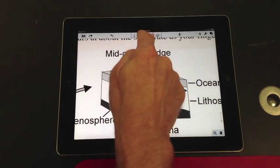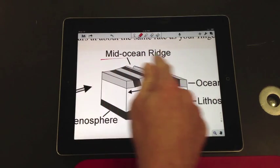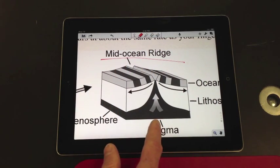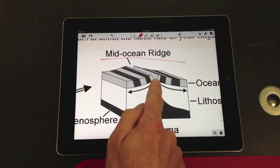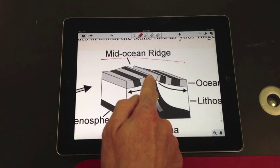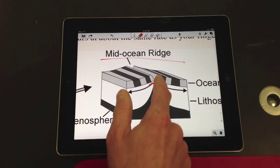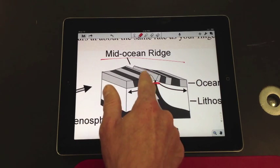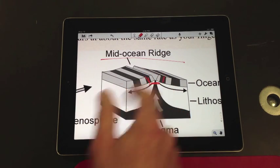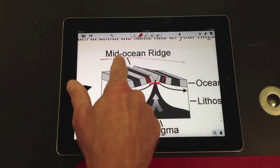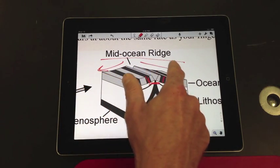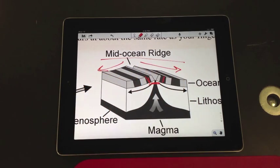So let me just recap here. Seafloor spreading occurs at the mid-ocean ridge. At that point, magma comes up and forms, solidifies, and forms the ocean floor. As it does that, the iron in the rock gets pointed at the current magnetic north, and in the past, magnetic north has been at different places. And so, the pattern is showing reversals as you go on either side of the mid-ocean ridge.